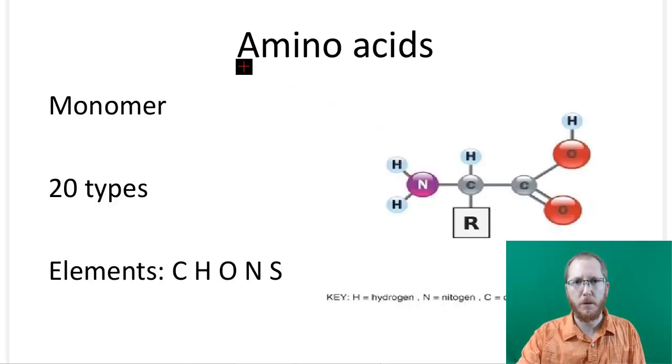Now proteins are going to be a polymer. They're going to be made up of amino acids. So the amino acid will be the monomer. And there are 20 different types. They all have a similar structure. They'll have carbon, hydrogen, oxygen, nitrogen. Most of them have sulfur.